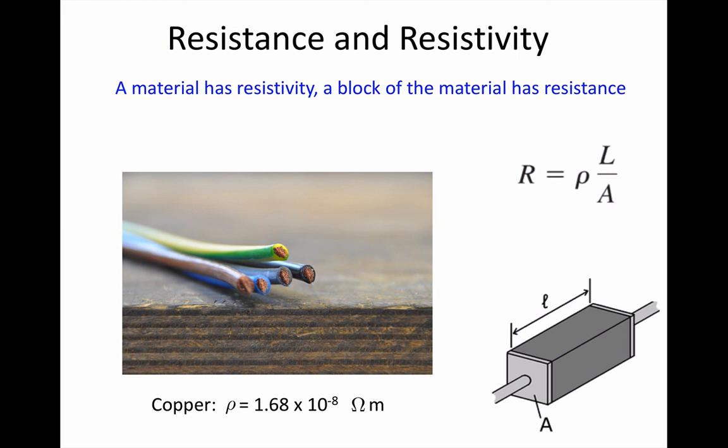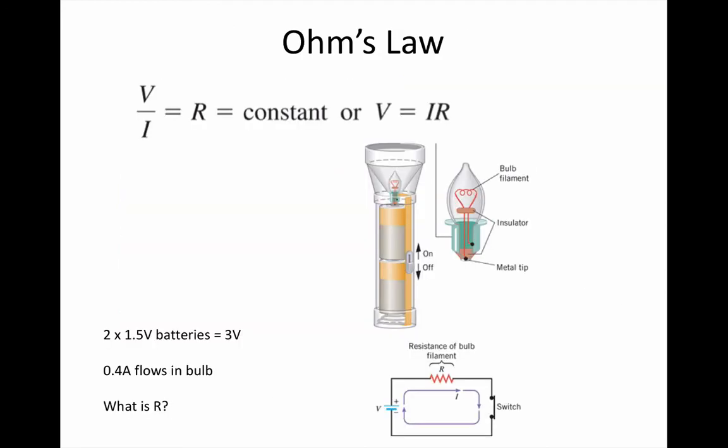Let's do a quick calculation using Ohm's law. We're going to look at the resistance of a torch here. We can see that this one is taking two 1.5 volt batteries, which gives 3 volts total, and we have a current of 0.4 amps flowing in the bulb.